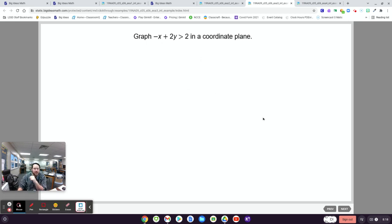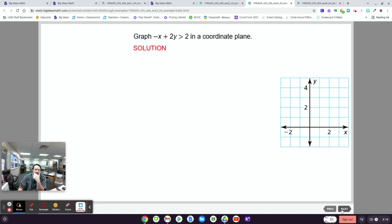All right. So let's graph this in a coordinate plane. So one thing you might want to do first is get this in the kind of y equals mx plus b mode. So get y by itself. Remembering that if you ever divide or multiply by a negative, you'll have to turn that side around. Okay. So in this case, if you get y by itself, you don't have to turn anything around. You just add x to each side, divide everything by 2, and you'll get this. y equals 1 half x plus 1. So that's what you're going to graph on the line.